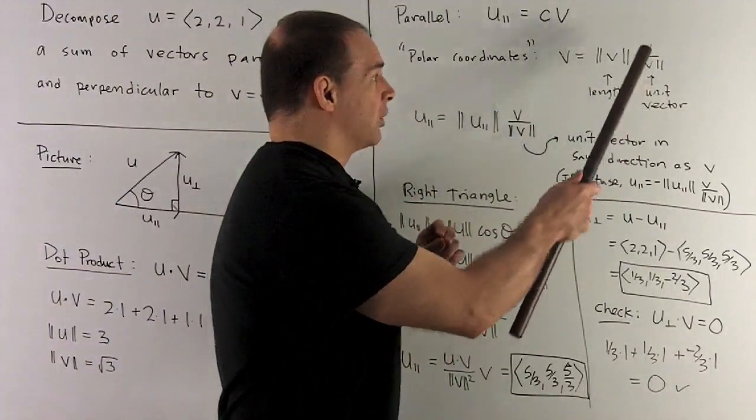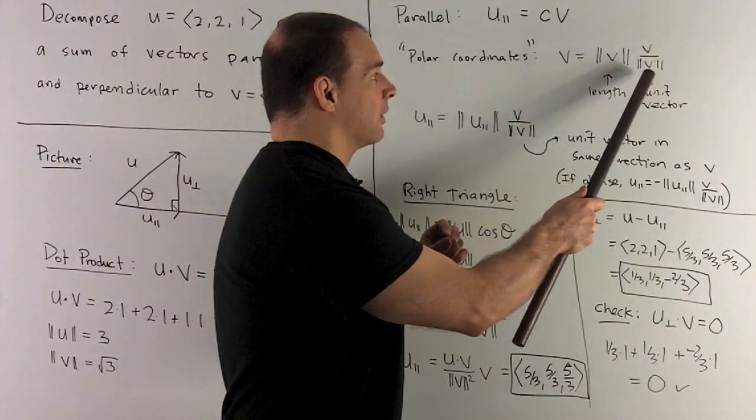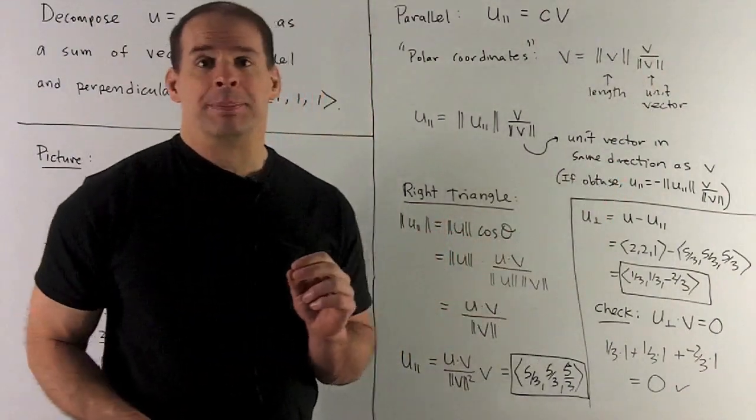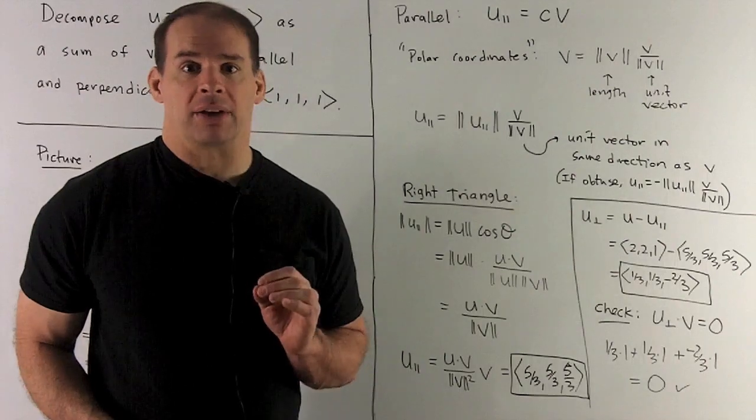So our scalar is the length, our unit vector is going to be just take your vector, divide by its length. So if you take the length of v over length of v, that thing has length 1, so it's a unit vector.